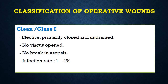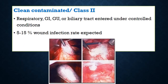There are four classes of operative wounds. Class 1 — clean wounds — are elective, primarily closed and undrained surgical wounds where no viscus has been opened and there is no break in aseptic technique. You do not expect an infection rate of more than four percent in such cases.